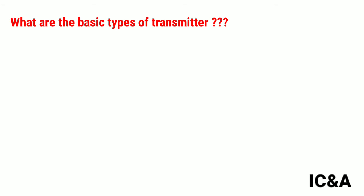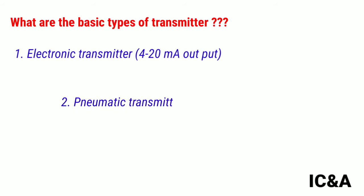What are the types of transmitters? Mainly there are two types of transmitters available: electronic transmitter with 4-20 mA output and pneumatic transmitter with 3-15 psi output.